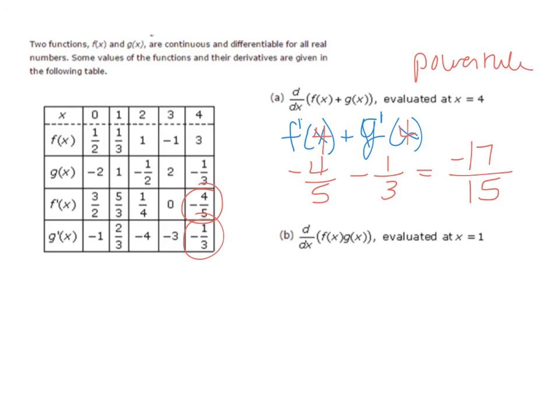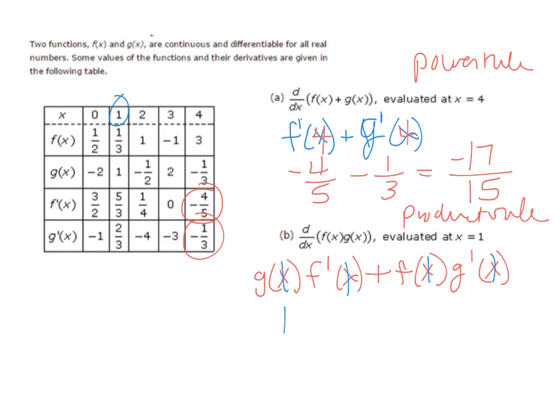And this is the product rule. And so you write it. It says second times the derivative of the first plus the first times the derivative of the second where x is 1. Alright? So I find here's 1. Right? So g of 1 is 1. f prime of 1 is 5/3. f of 1 is 1/3. And g prime of 1 is 2/3. So I have 5/3 plus 2/9. 3, 15. So that should be 17/9.